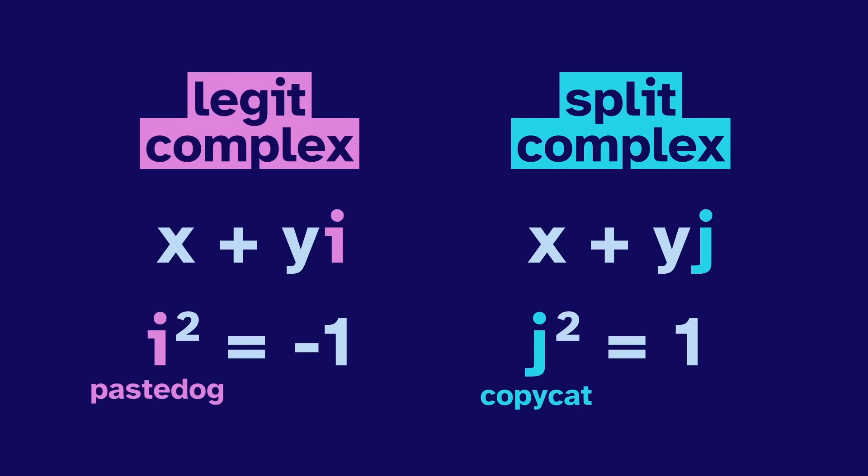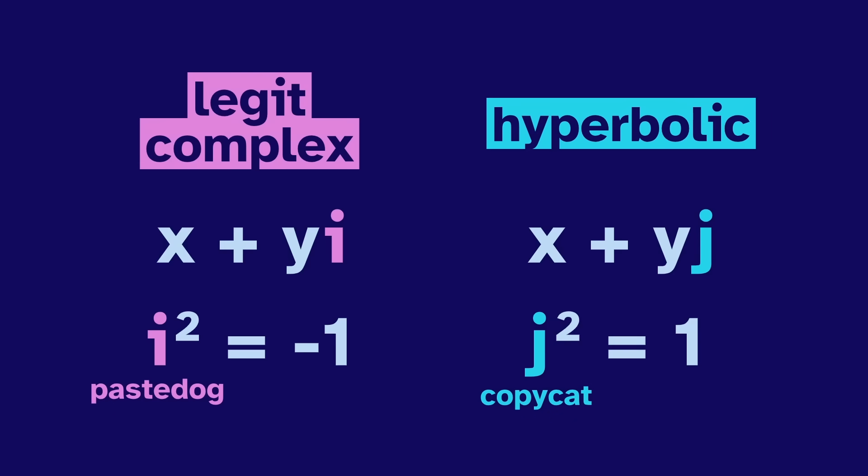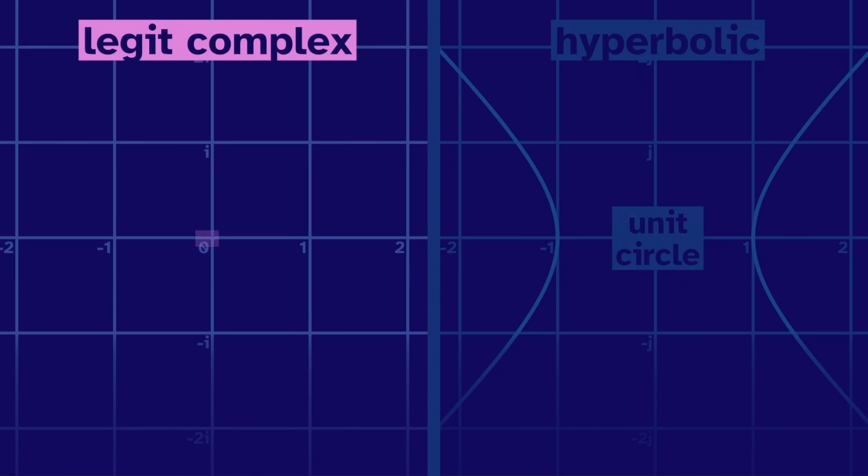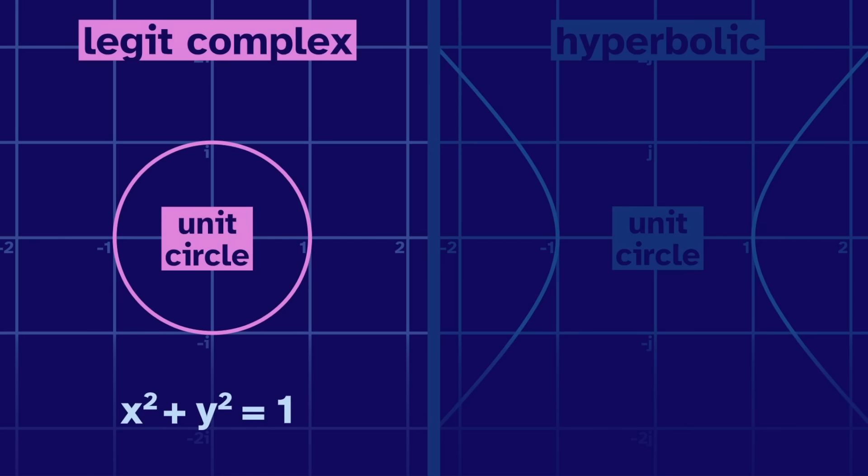The split complex numbers are sometimes called the hyperbolic numbers, because this hyperbola is their unit circle. In the legit complex, the unit circle is an actual circle. All the numbers where x squared plus y squared equals 1.